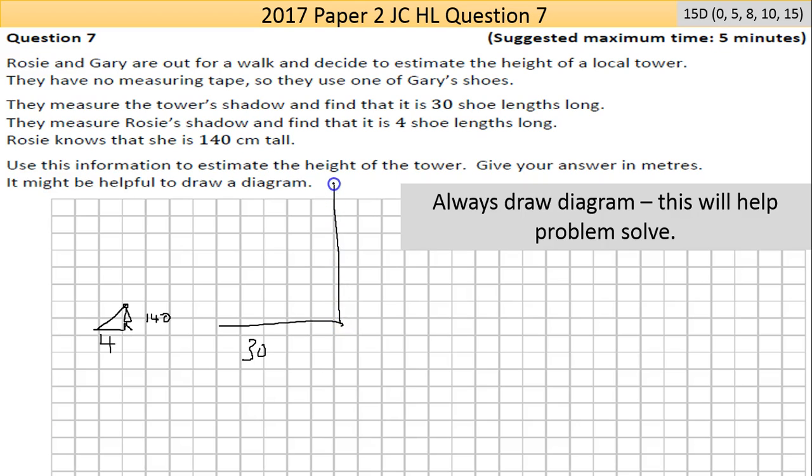Now the tower is casting a shadow of 30 shoe lengths. It will cast the same shadow at the same time of day, creating an equal triangle. Now it's bigger in magnitude, yes, but the angles are all the same because the sides are in ratio to each other. So that's the basic gist of what's going on here.